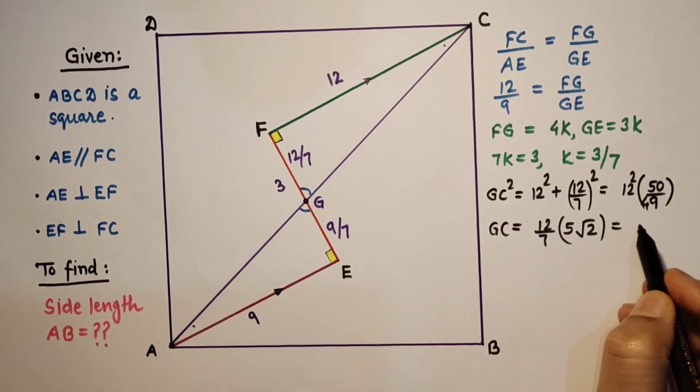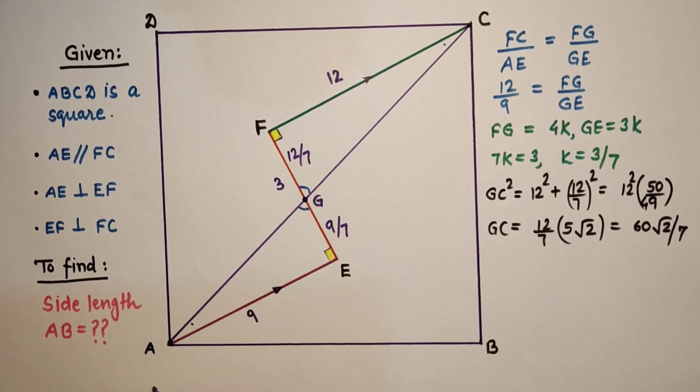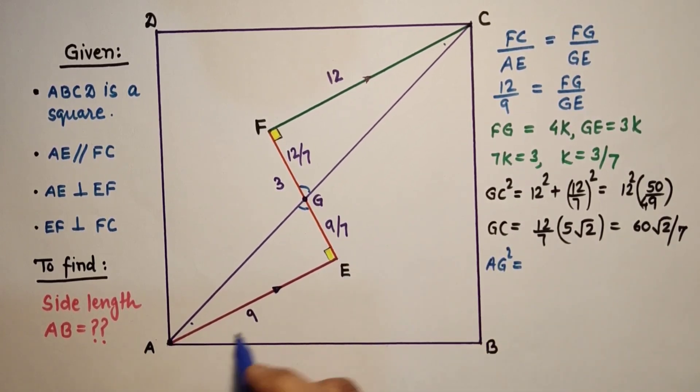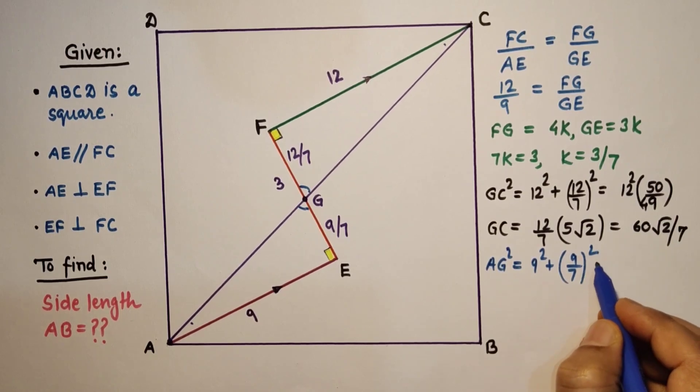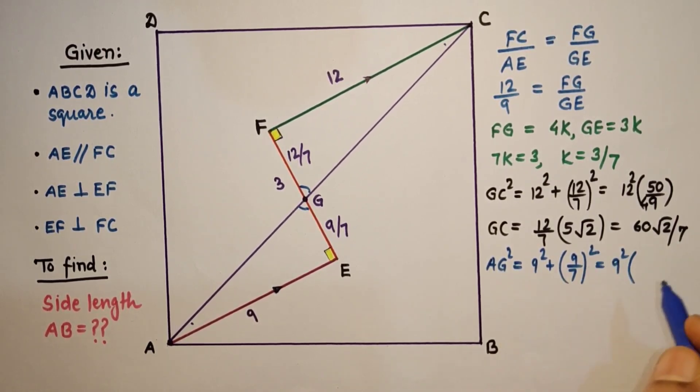If we use Pythagorean theorem in this triangle, then AG square is equal to 9 square plus 9 by 7 square. And if we take 9 square common, it will again be 1 plus 1 by 49, so 50 by 49.